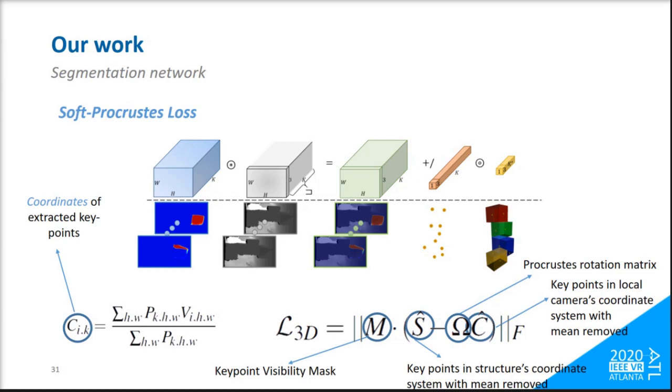Starting from the light blue tensor P containing each of the K-class's probabilities, and the gray vertices tensor V obtained by deprojecting the input depth map, we establish soft correspondences as follows. We first multiply the tensors P and V, and reduce the result with a mean operation across the spatial dimensions, resulting in the orange tensor containing the soft correspondences' 3D coordinates.